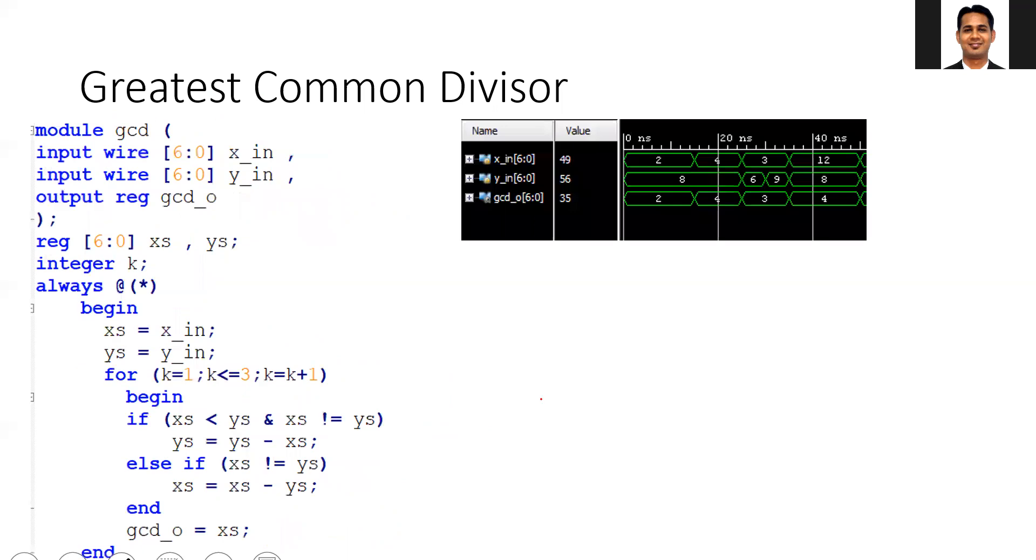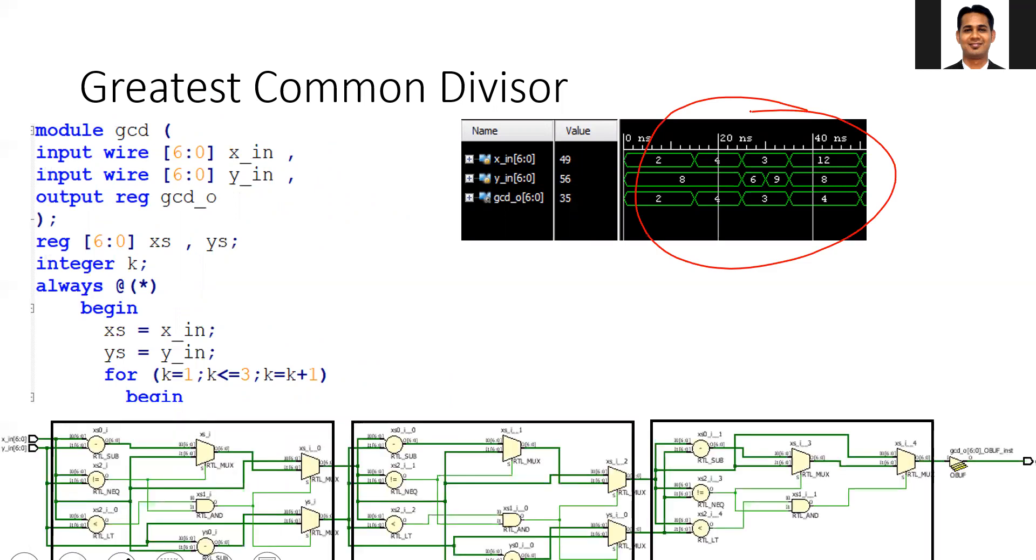In this simulation, you can see the code is working fine and you're getting the correct output. When you synthesize the hardware, you can see that for three iterations, three sets of blocks are created one after the other, and each block corresponds to one iteration.